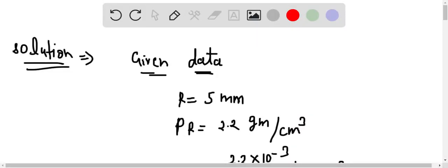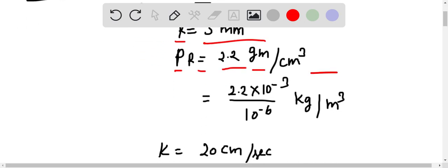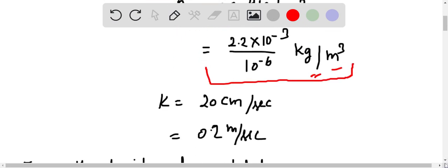Here for the solution of the question, first given data: r equals 5 mm, ρR equals 2.2 gm per centimeter cube, which will be in kilogram per meter cube, that's 2.2 multiply by 10 to the power minus 3 divided by 10 to the power minus 6 in kilogram per meter cube.